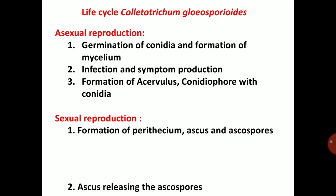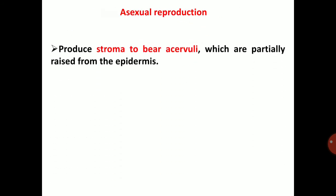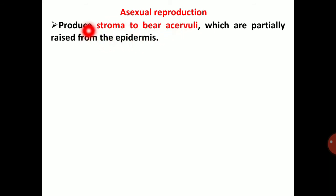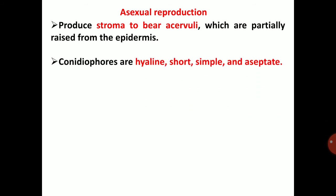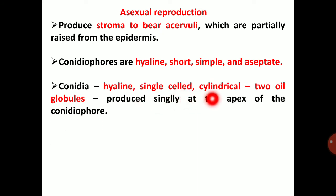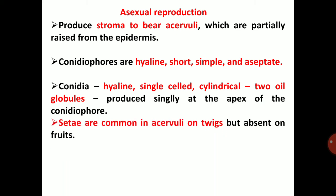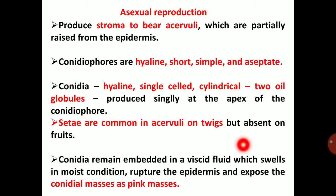Formation of perithecia, asci, and ascospores. Ascus releases the ascospores. In asexual reproduction, it produces the stroma bearing acervuli, which are partially raised from the epidermis. Conidiophores are hyaline, short, simple, and aseptate. Conidia are hyaline, single-celled, cylindrical, with two oil globules, produced singly at the apex of the conidiophores. Setae are common in acervuli on twigs but absent on fruits. Setae are black-colored projections. Conidia remain embedded in a viscid fluid which swells in moist conditions, ruptures the epidermis, and exposes the conidial masses as pink masses.